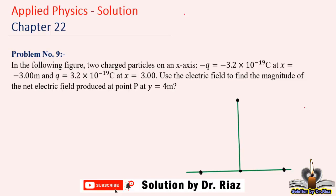Assalamualaikum. Chapter number 22, problem number 9 solve karte hain. In the following figure, two charged particles are located on the x-axis: a negative charge minus q is located at x = -3, and a positive charge is located at x = 3 on the x-axis from the origin.